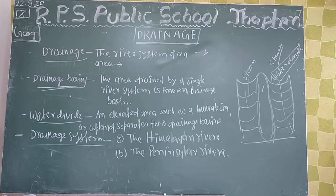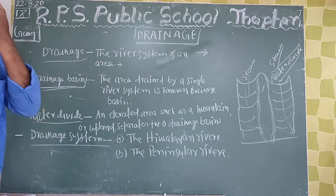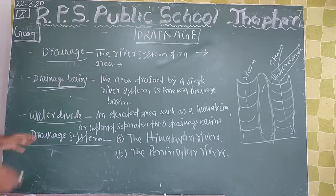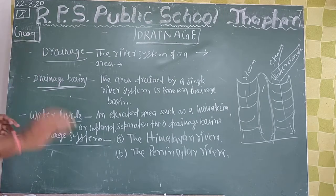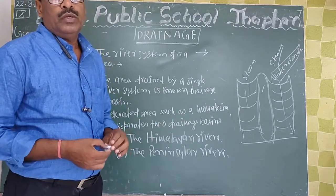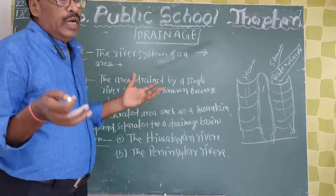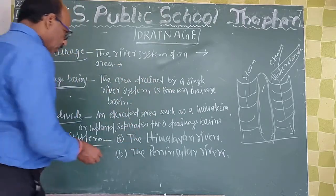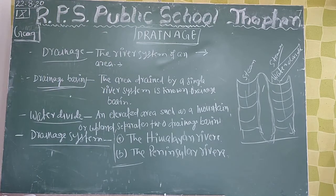This will be very similar to the Himalayan rivers and the Peninsular rivers. These are the rivers that originate from the Himalayas mountain, and the second type is the river that originates from the Peninsular plateau, which is the river system.